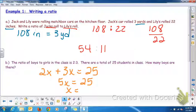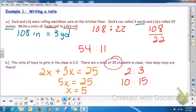so x is 5. So every part of the two to three means that there are five students in each part. So if it's two to three, then it means that there's 10 boys and 15 girls for a total of 25 students.